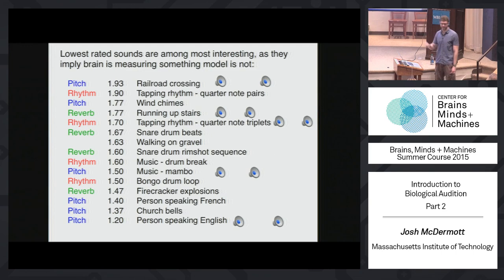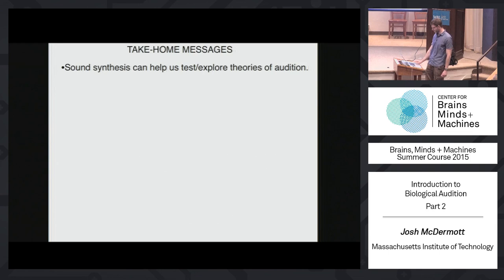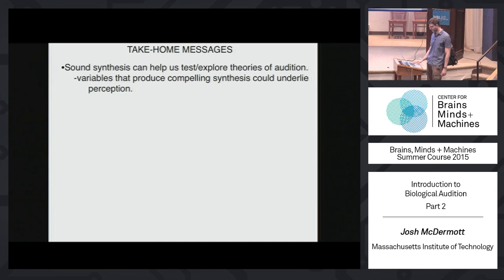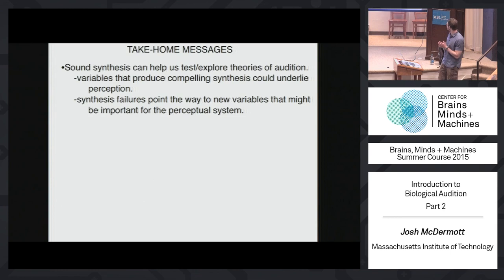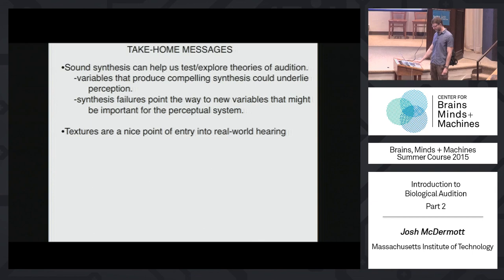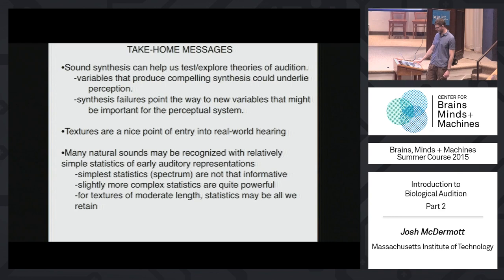Take-home messages from this portion of the lecture: sound synthesis is a powerful tool that can help us test and explore theories of audition, in that the variables that produce compelling synthesis are things that could plausibly underlie perception, and conversely, synthesis failures point the way to new variables that might be important for the perceptual system. Textures are a nice point of entry for real-world hearing — you can work with actual real-world signals in all their complexity. Many natural sounds may be recognized with relatively simple statistics of early auditory representations. The simplest kinds, like the spectrum, are not that informative alone, but if you go a little more complex into marginal moments and correlations, you get representations that are pretty powerful. For textures of moderate length, statistics may be all that we retain.